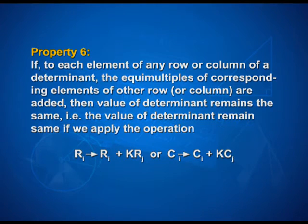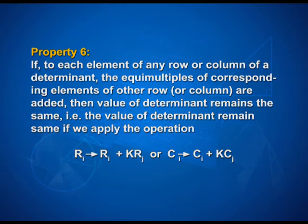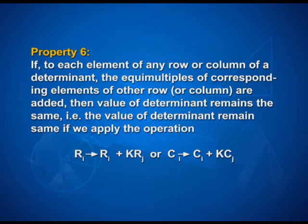Now let us look at property number 6: if to each element of any row or column of a determinant the equimultiples of corresponding elements of other rows or columns are added, then the value of the determinant remains the same. That is, the value remains the same if we apply the operation Rᵢ → Rᵢ + k·Rⱼ, or Cᵢ → Cᵢ + k·Cⱼ.